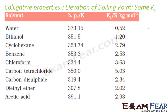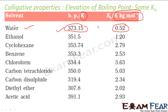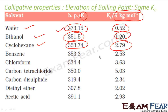Here are some boiling point elevation values for solvents. Water has a boiling point of 373 K and K_b of 0.52 K·kg/mol. Ethanol has boiling point 351 K and K_b of 1.2. Cyclohexane has boiling point 353 K and K_b of 2.79. Benzene has boiling point 353 K and K_b of 2.83. All these are experimental values.